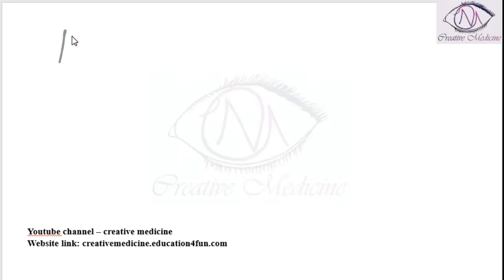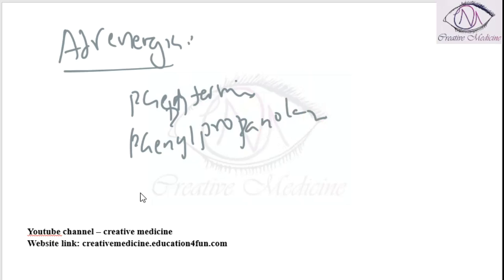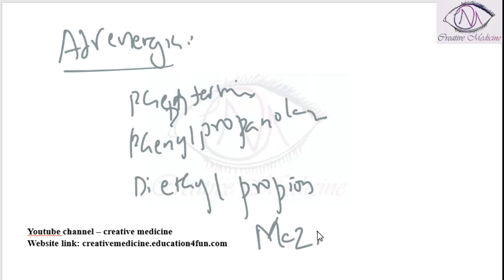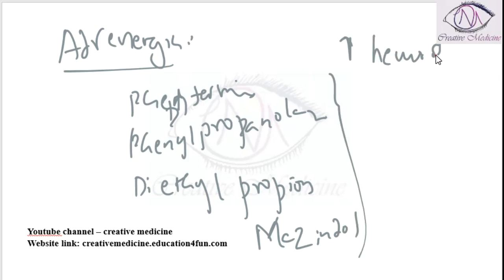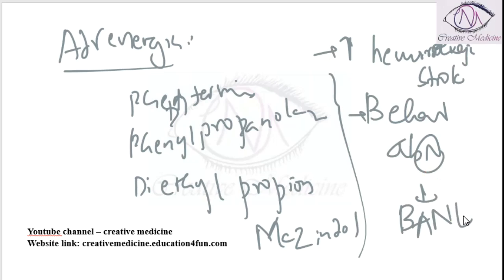Then we have adrenergic drugs such as phentermine, phenylpropanolamine, diethylpropion, and mazindol. All these increase the incidence of haemorrhagic stroke and also cause behavioral abnormalities. Because of these serious side effects, they are banned.